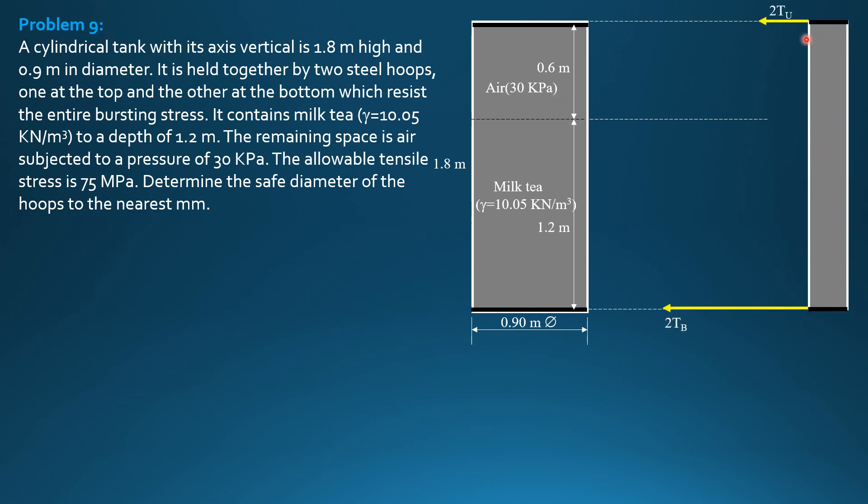So we have two tensions on the upper hoop, two tensions on the bottom hoop. This is the pressure diagram. The intensity of pressure here is 30 kilopascals. Then let's call the force as F1 acting half of 1.8, 0.9 above, 0.9 below. Then F2, one third of 1.2 is 0.4 below, then 1.4 above. Then let's call this P.